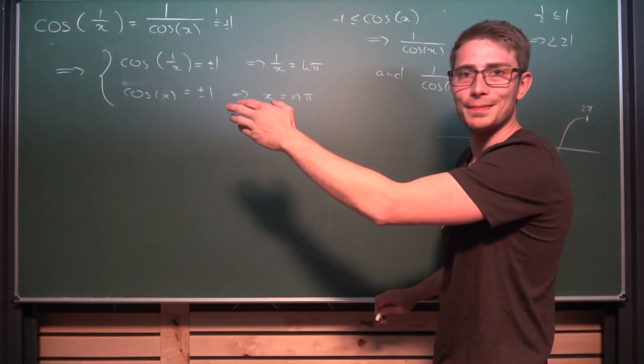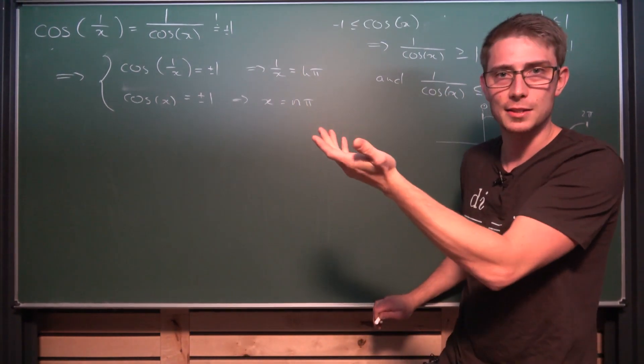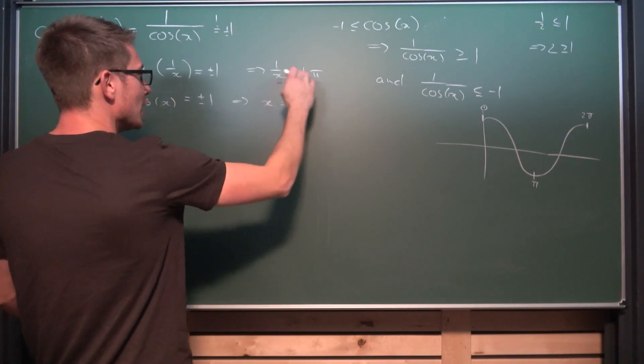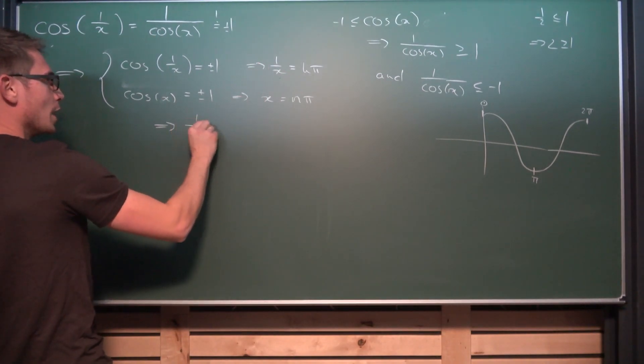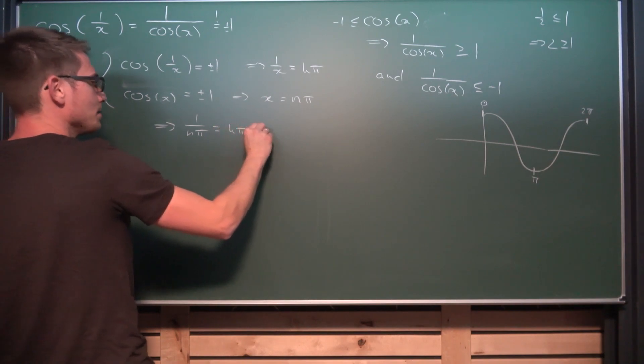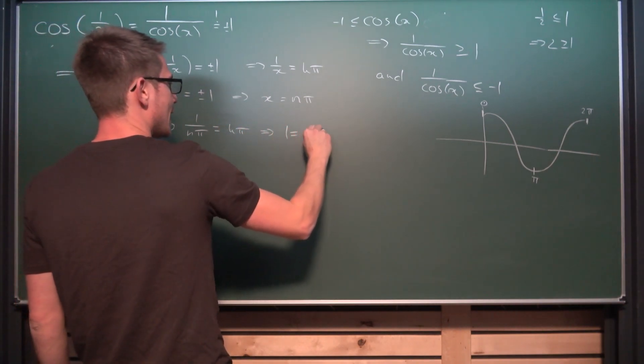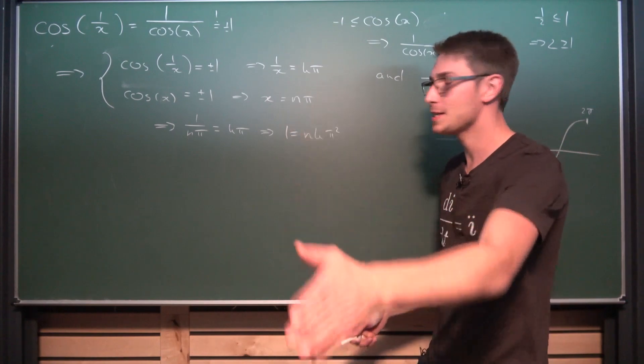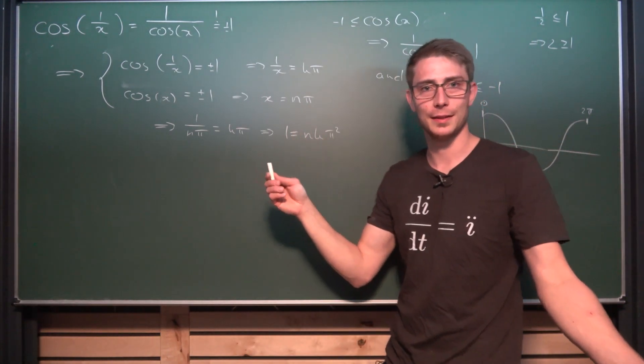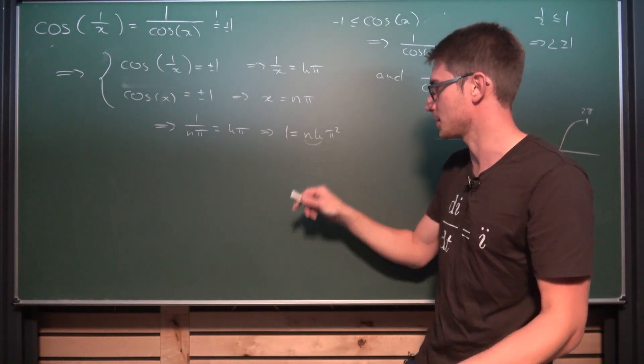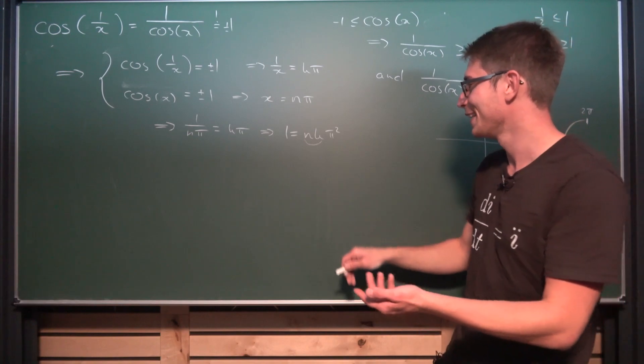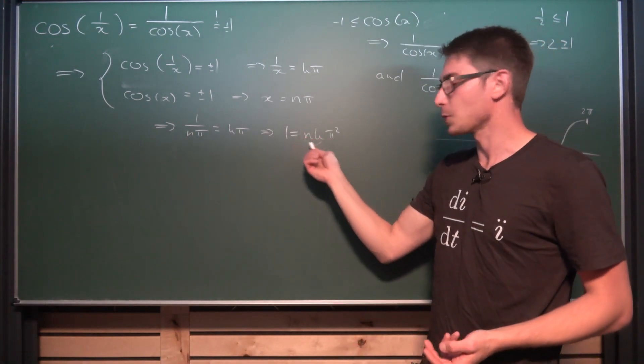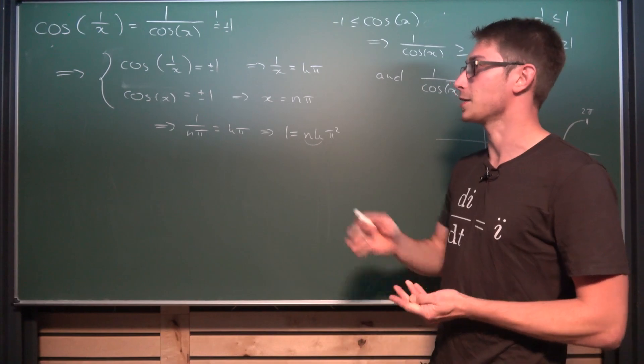And I think you can already see the problem here. That doesn't work out. But let us just solve this quickly. We could substitute the x into here. Meaning we are going to get that this only holds if 1 over n times pi is equal to k times pi. Meaning overall 1 must be equal to n times k times pi squared. It starts already with pi not being a fraction. Just doesn't work out. This can never be equal to 1. It just doesn't work out because n times k can never be the multiplicative inverse of pi squared. And with that we are done. There are no solutions.